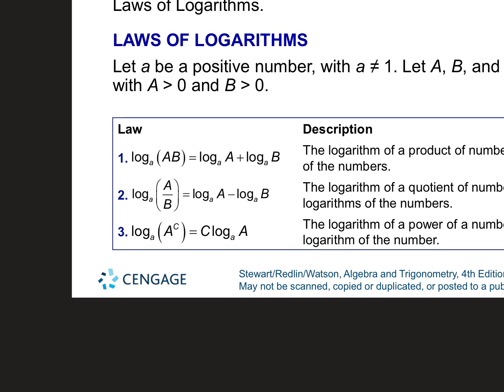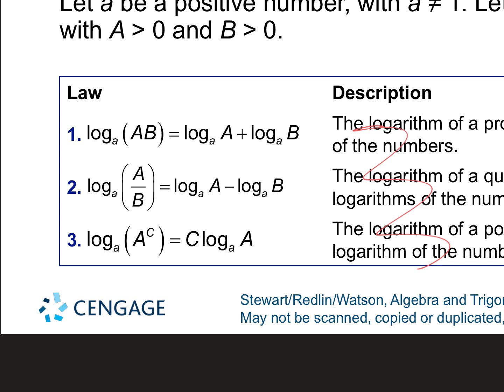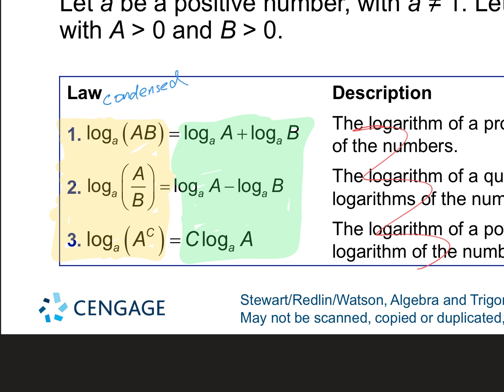Here are the laws of logs. I want to talk about comparing the left-hand side of the equal sign to the right-hand side. The yellow side is condensed — smushed together — and the green side is expanded, pulled apart. On the condensed side, the word log is written one time. When you expand, every single term gets its own word log with a little base.